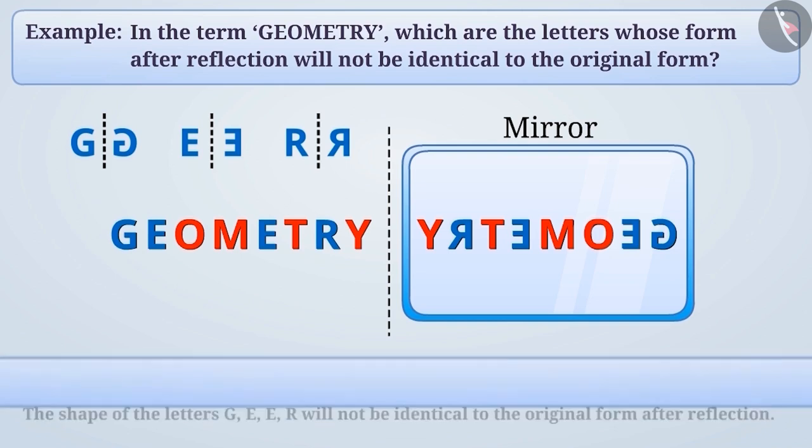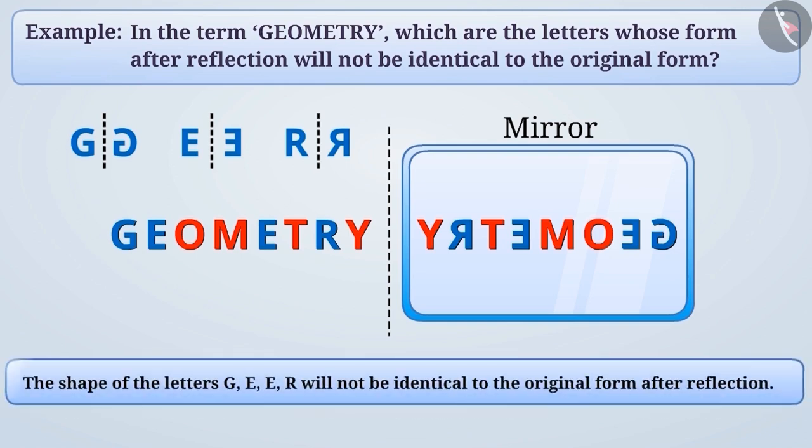Therefore, we can say that the shape of the letters G, E, R will not remain identical to the original form after reflection.